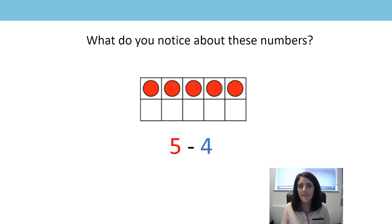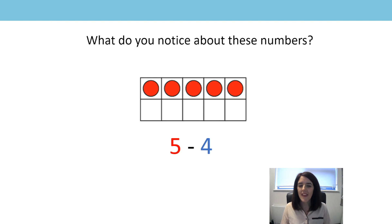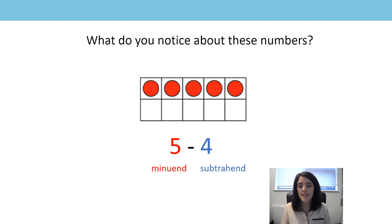I have five counters in my tens frame, and then I'm going to take four of those counters away. So five is the minuend. And that means that four must be the subtrahend, because it's being taken away from the minuend.